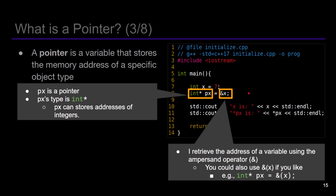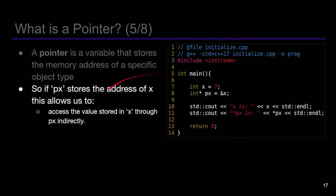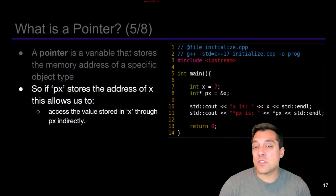We'll go over this example several times so it's clear what's going on. The equals assignment stores the address of x into our px. We're essentially copying that value into our integer pointer, and we can thus say px points to x. If px is going to store the address of x, this allows us to store or access the value of x indirectly, as we're pointing to the memory where x lives. Pointers allow us to indirectly access memory, which is important because we could have multiple pointers pointing to a variable.